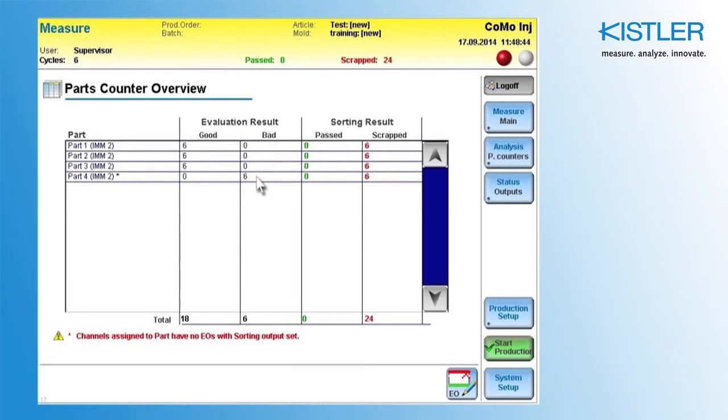This is the case by default because without an evaluation object, the monitoring device cannot guarantee that the channel is good. In this case, this one bad part causes all parts to be marked as bad, because the parts are all separated out together.